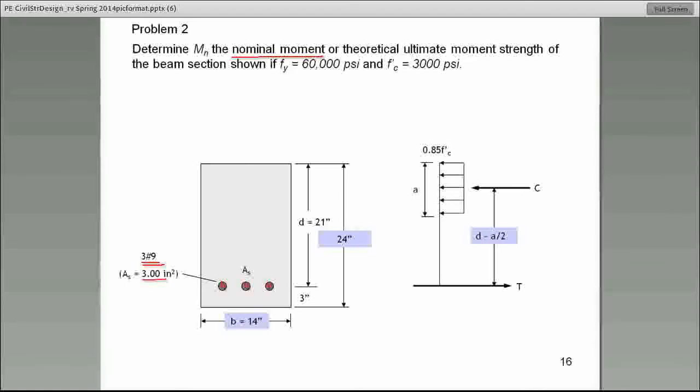the cross-section of a number nine is one square inch. Therefore, the total area of the steel, A sub S, the total area of the steel is three square inches. I hope that you understand that because this shows up in several of the problems we'll be doing today. All right. Let's see what we are given.